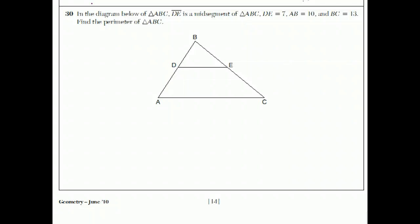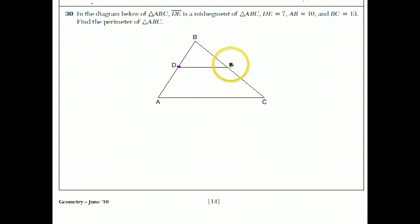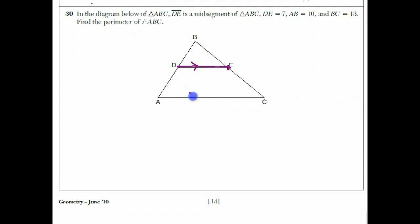For question 30, they have this triangle and DE is the mid-segment. Mid-segment means that if you take the midpoint of AB and the midpoint of BC and you connect them, it's called a mid-segment. And there are two properties of the mid-segment. One is that it's parallel to that base, and also it's one-half the length of it.